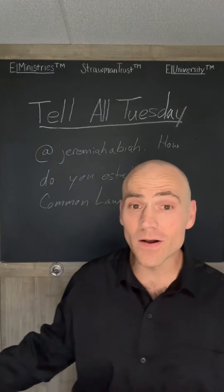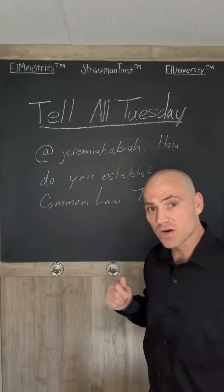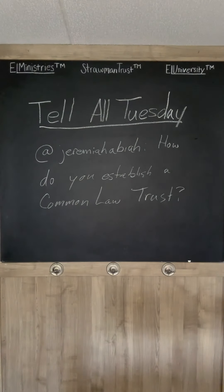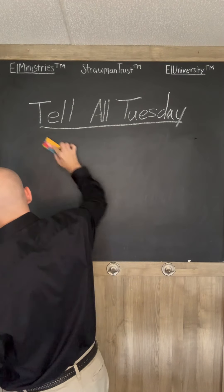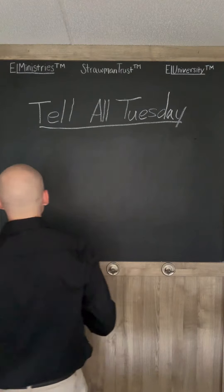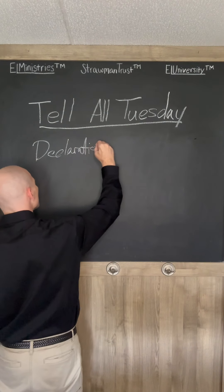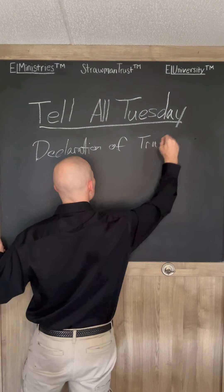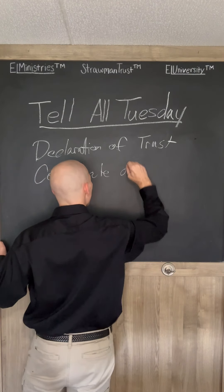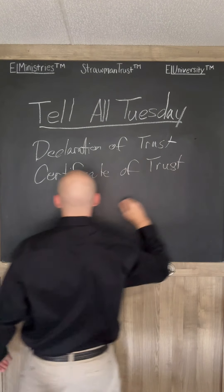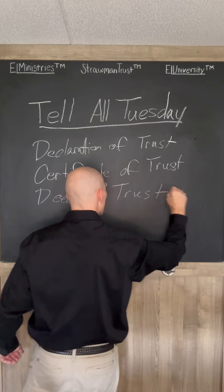Since I know no one else is going to do it, I'm going to go ahead and tell you how to establish a common law trust, right now, today on Strawman Trust Productions. Are you ready? We're going to get up the answers that you're looking for. Now, you need a declaration of trust, a certificate of trust, a deed of trust, and your first minutes of trust.